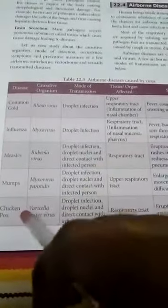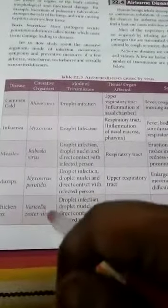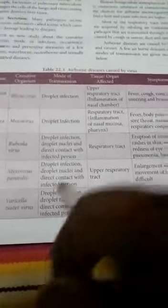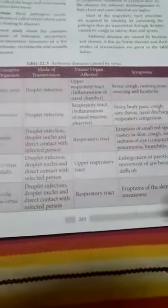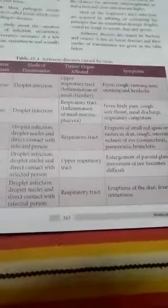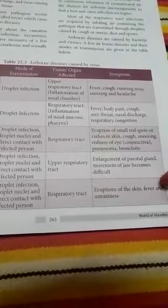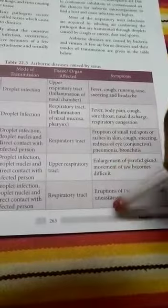A symptom of mumps is that movement of the jaws becomes difficult. Chickenpox is caused by the varicella zoster virus. It spreads through droplet infection. The respiratory tract is fully affected. Symptoms include erosion of the skin, fever, and uneasiness.